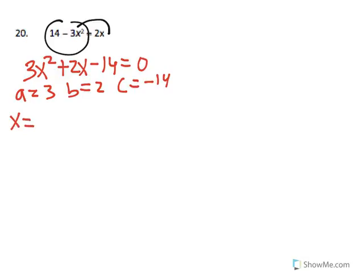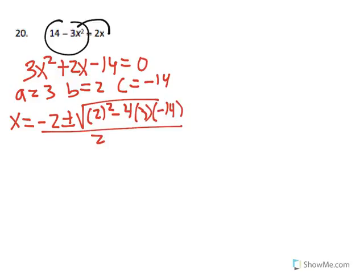x is equal to negative 2 plus or minus square root of 2 squared minus 4 times 3 times negative 14 all over 2 times 3. We have negative 2 plus or minus square root of 4 plus 168 all over 6.